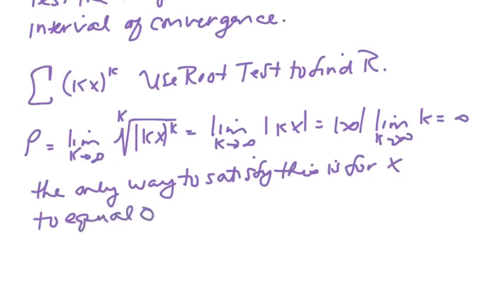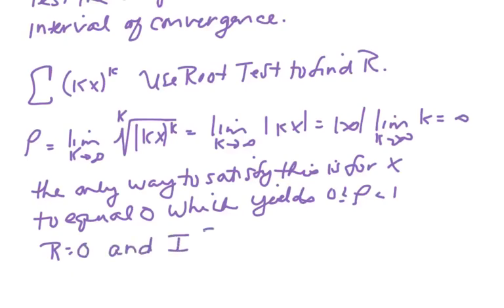Which yields satisfaction of the convergence criteria for rho, right? Because rho must be greater than or equal to 0 or less than 1. So r is equal to 0 and the interval of convergence is simply the point 0.